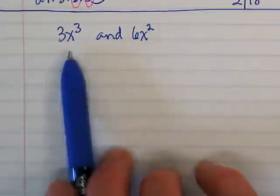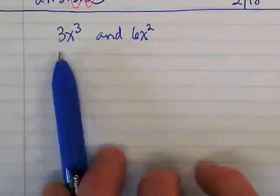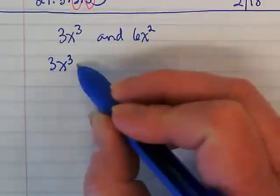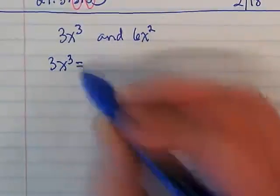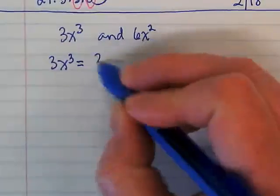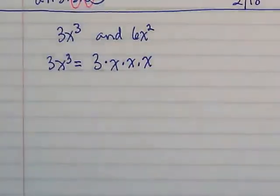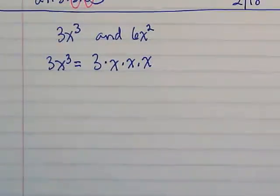Now, what I'm going to need to do is break this up into all of its factors. 3 is already prime. So when I write the factors of 3x to the third, that's equal to 3 times 3 x's. Where did I get the 3 x's? Because it's x to the third.